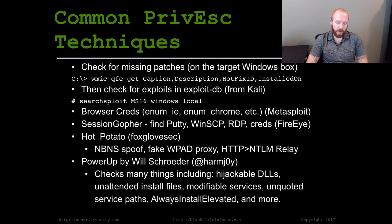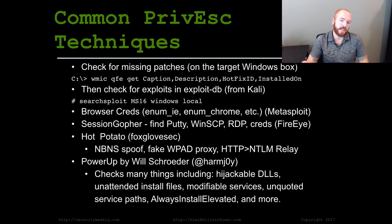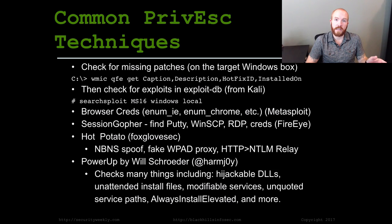So what are some common privilege escalation techniques? One thing I always look for first when I get access to a Windows box is just check for missing patches on the system, because there are plenty of exploits and vulnerabilities out there for Microsoft itself for privilege escalation. You can run the WMIC command to find the latest hotfixes and patches installed on the system, and then compare that to a list of potential patches that have exploits available for privilege escalation.